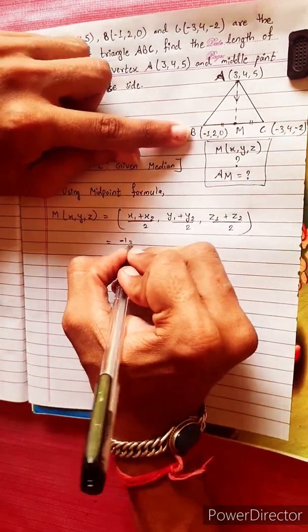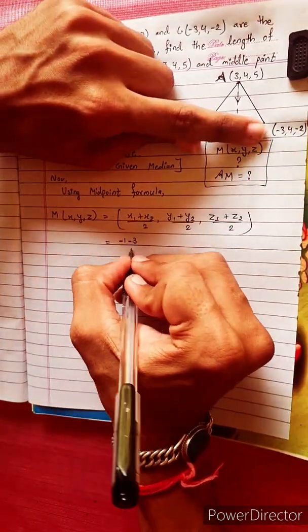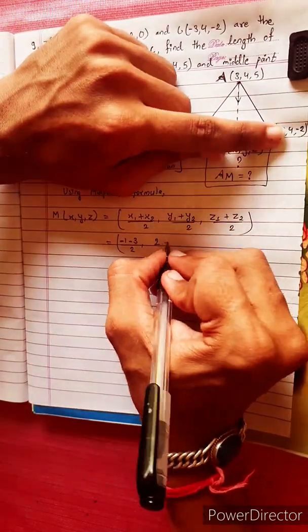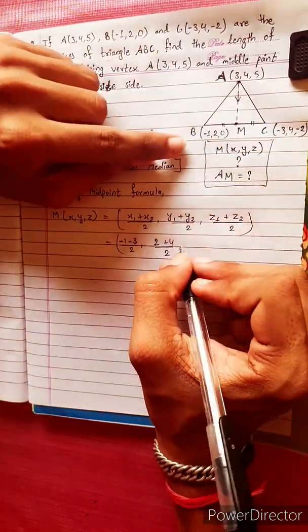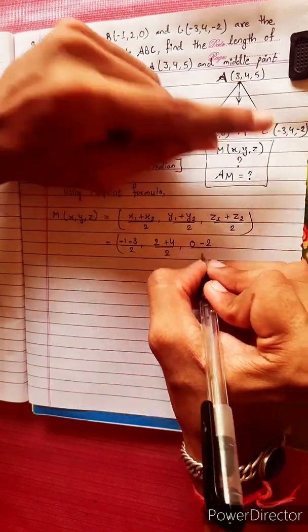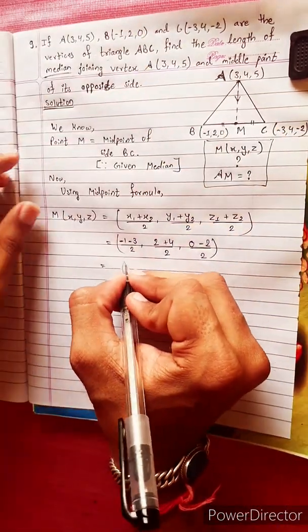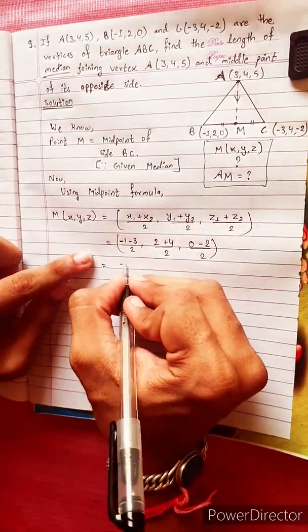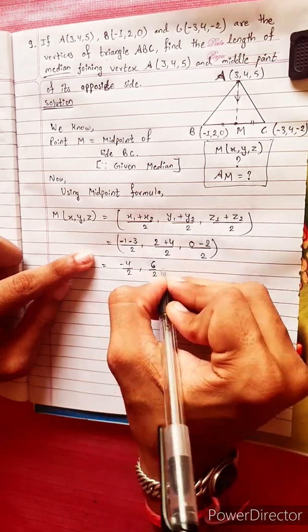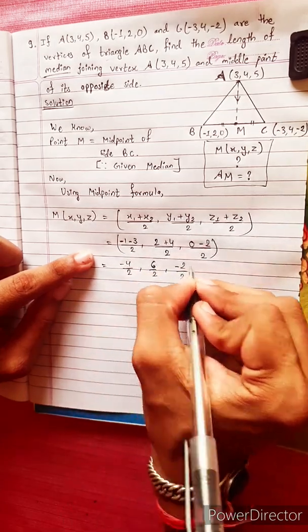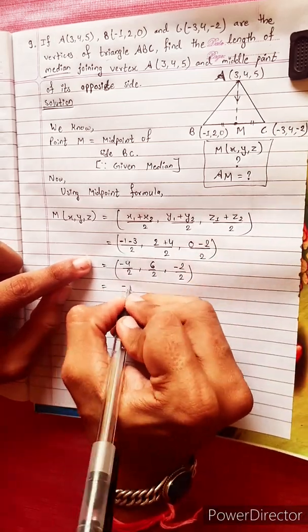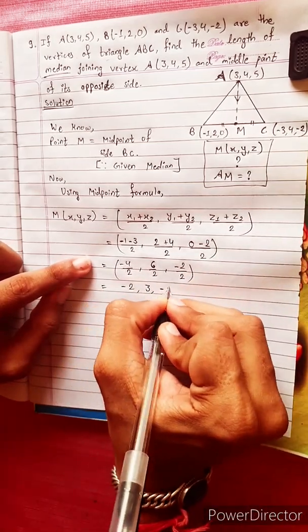x1 is -1, x2 is -3. y1 is 2, y2 is 4. z1 is 0, z2 is -2. So M equals (-1 plus -3) by 2, (2 plus 4) by 2, (0 plus -2) by 2, which gives -4 by 2, 6 by 2, -2 by 2.